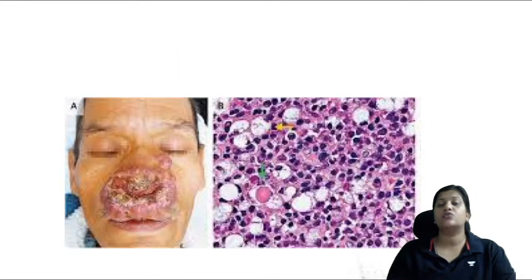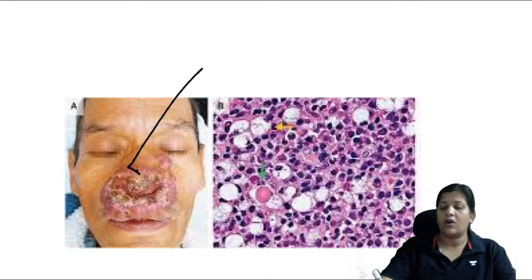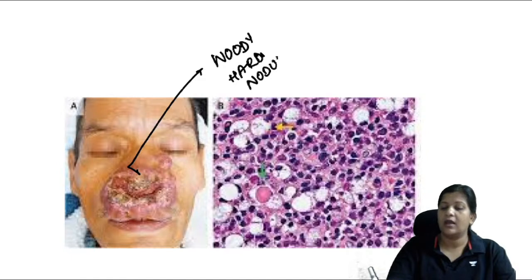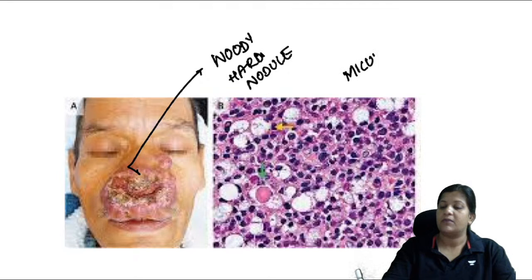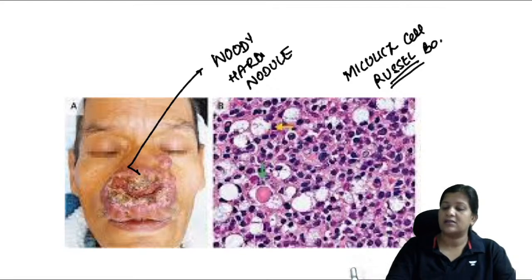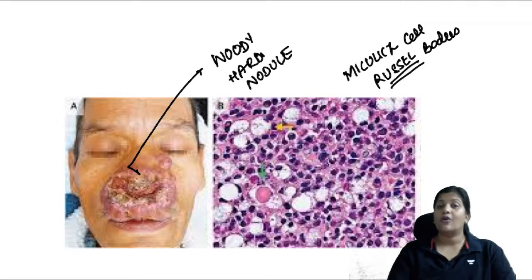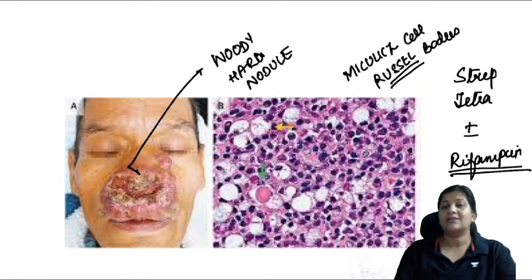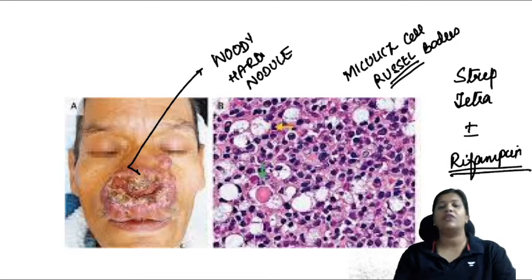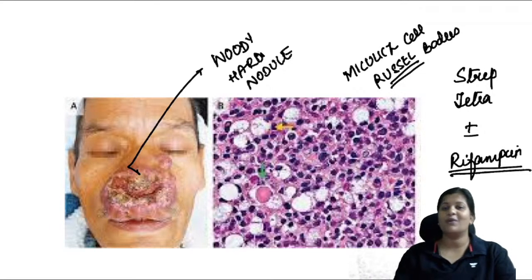This image shows rhinoscleroma — hallmarked by a woody hard nodule. The two specific histological cells are Mikulicz cells and Russell bodies. Rhinoscleroma is caused by Klebsiella rhinoscleromatis, a gram-negative bacterium. Drug of choice: streptomycin and tetracycline with or without rifampicin, plus debridement of dead tissue. Note: dapsone is used for rhinosporidiosis to prevent recurrence, not for rhinoscleroma.